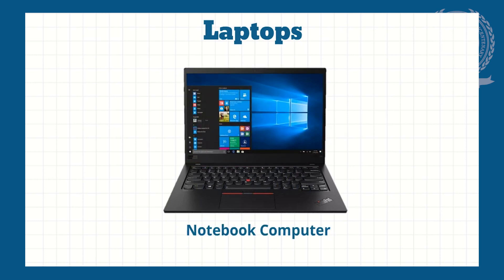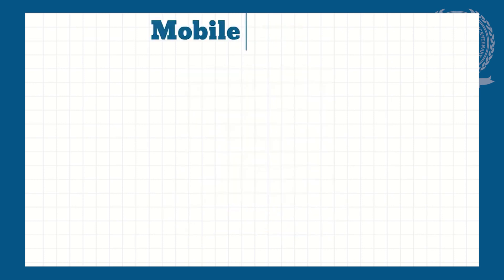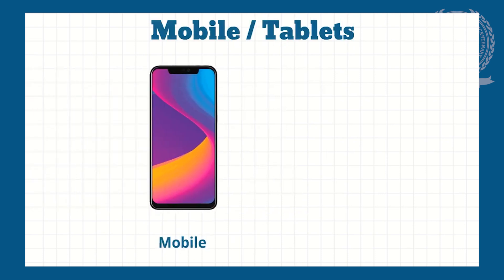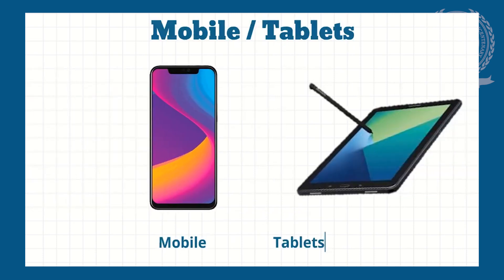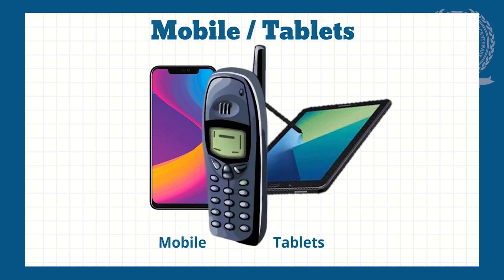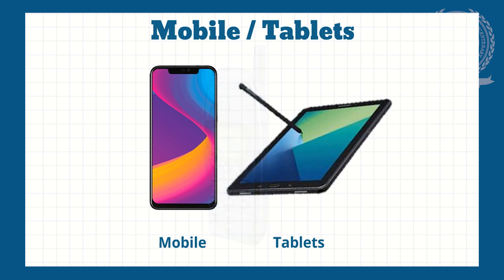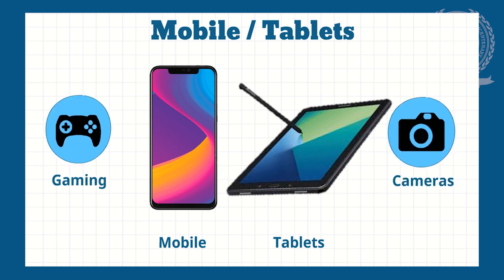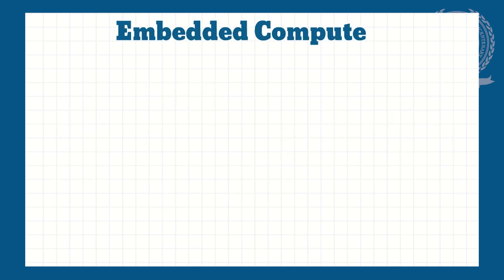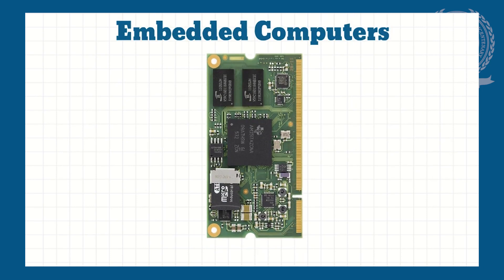We also have today smartphones and touch screen tablets which can easily be carried anywhere. While they were initially meant for limited capacity, now they are used for gaming, videos, and high-end cameras. Many of the devices used today have embedded systems like smart TVs,